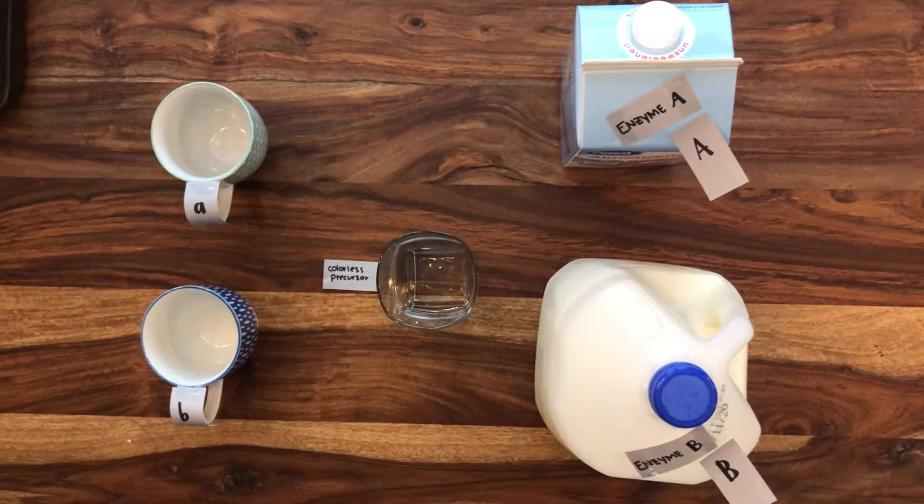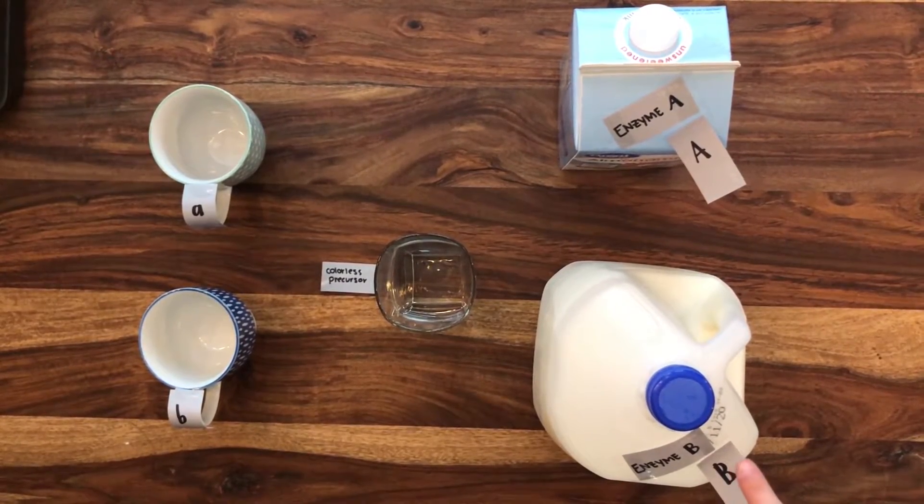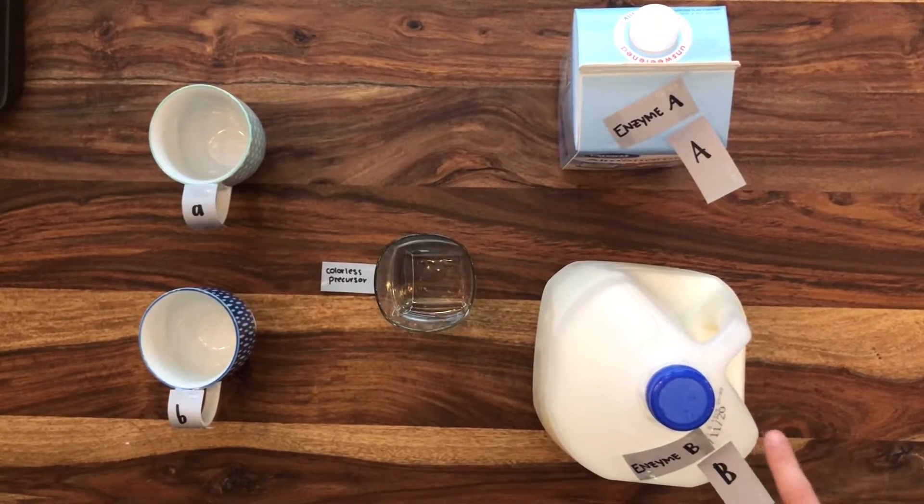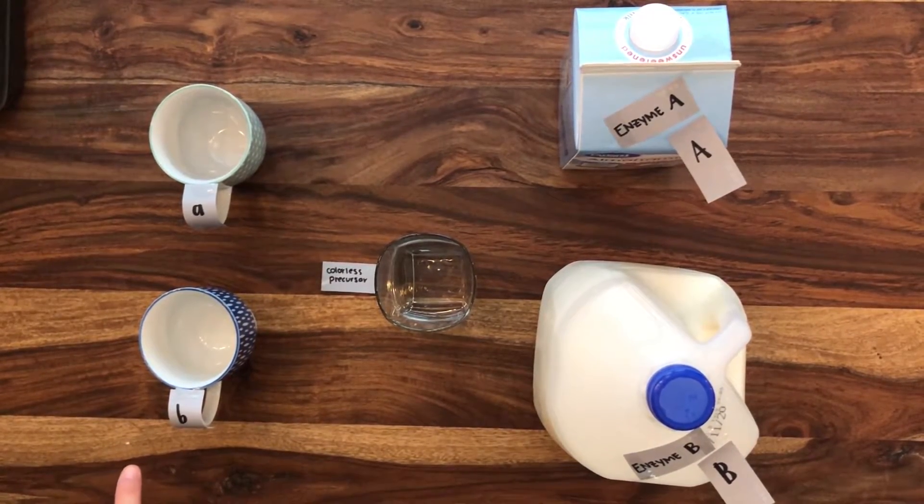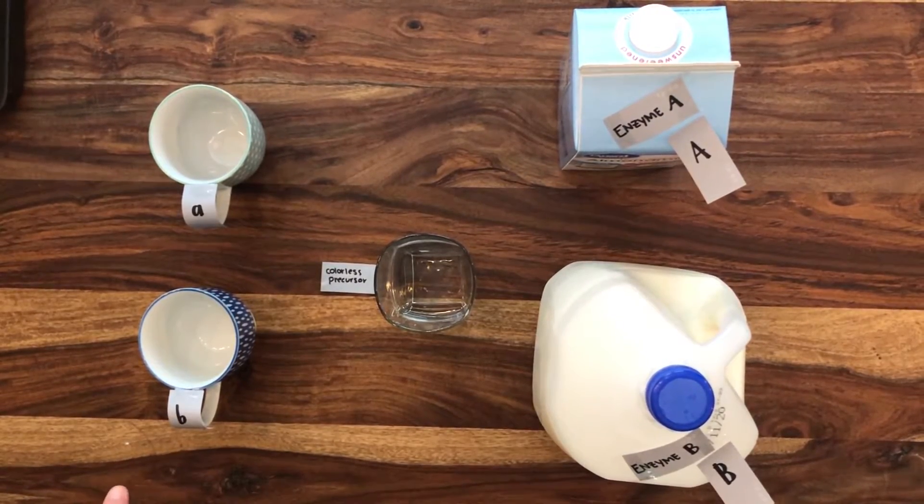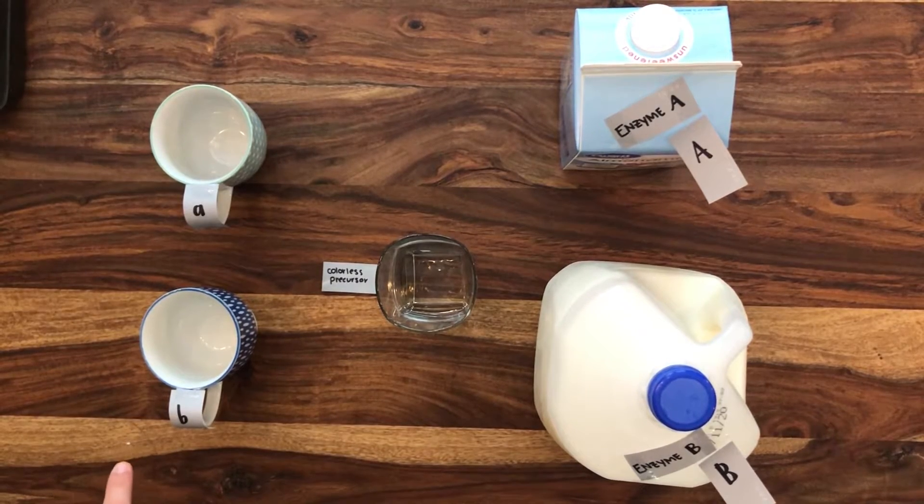This 2% milk will represent enzyme B, which is produced when uppercase B allele is present at locus B in the genotype. When lowercase B allele is present, it does not contribute to the production of any enzymes altering liquid color. This empty blue mug represents lowercase B's contribution to the phenotype, which is nothing.